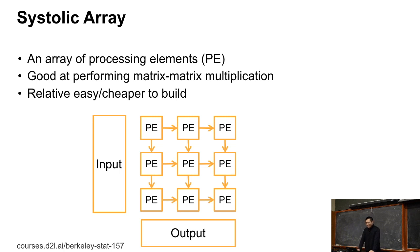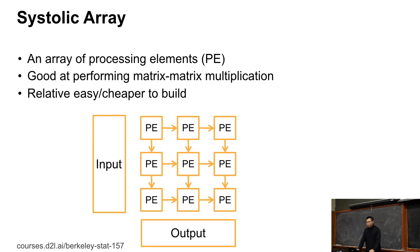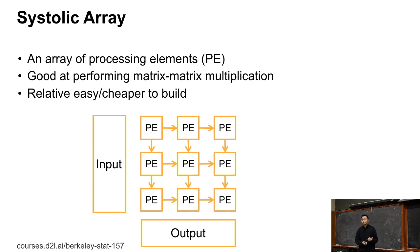A systolic array has an array of processing elements, called PEs. Each PE, in a simplified version, takes two floating point inputs and performs multiplication. The systolic array aligns these PEs into a 2D mesh connected by rows and columns, with an input buffer and output buffer. You can configure the number of rows, number of columns, and the input/output buffer sizes. This design is built for matrix-matrix multiplication.